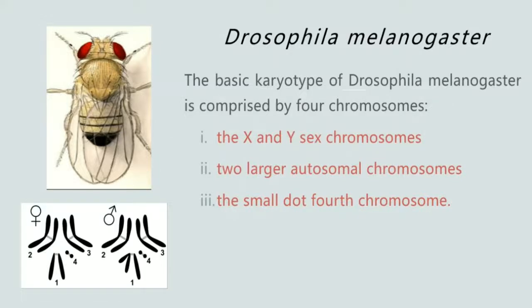In this video we will have a brief overview of the karyotype of Drosophila melanogaster. Karyotype is basically the number and appearance of the chromosomes in cell nuclei of an organism.